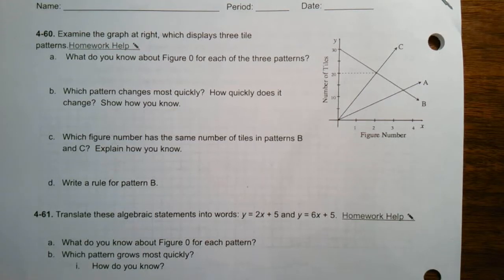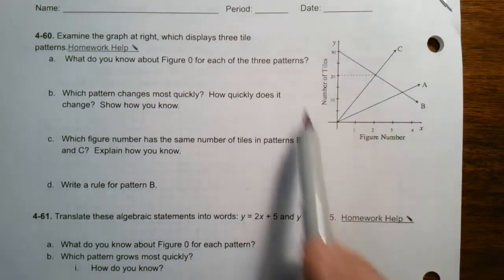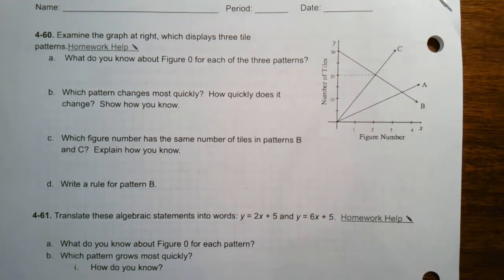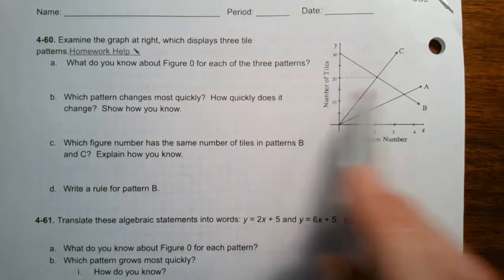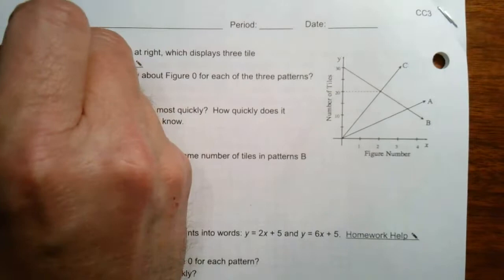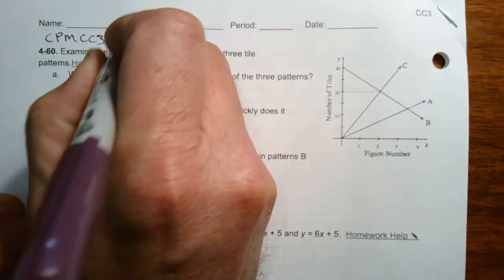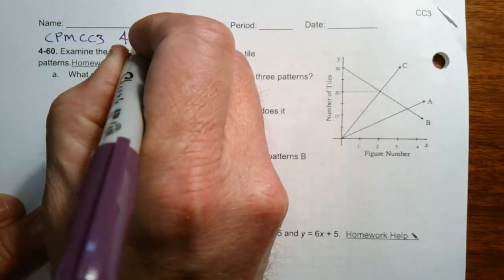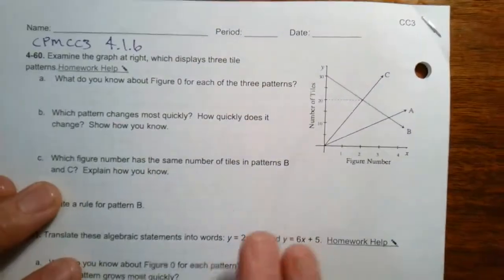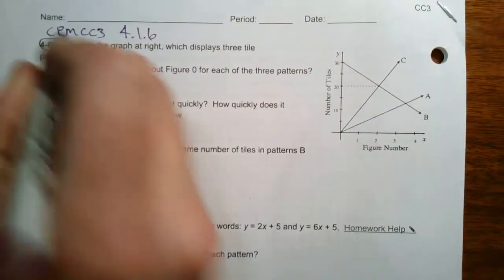Hey folks, Mr. Dell here. We are looking at a problem that has to do with interpreting a graph. So you've got a graph over here with a bunch of lines, and we're going to do some interpretation of some components of that graph. This is a problem that I'm taking from CPM course three, and this is section 4.1.6. And this is number 4-60.